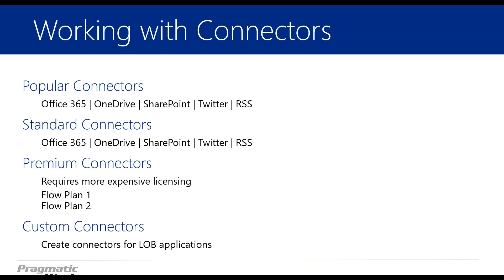Our most popular connectors are definitely O365, OneDrive, and SharePoint — they work really well with Flow. Of course, it's Microsoft working with Microsoft, so they handshake well. You could use Excel or another data source if you had your own gateway or warehouse setup. We're going to be using OneDrive and SharePoint in this example because they work really well with Flow.